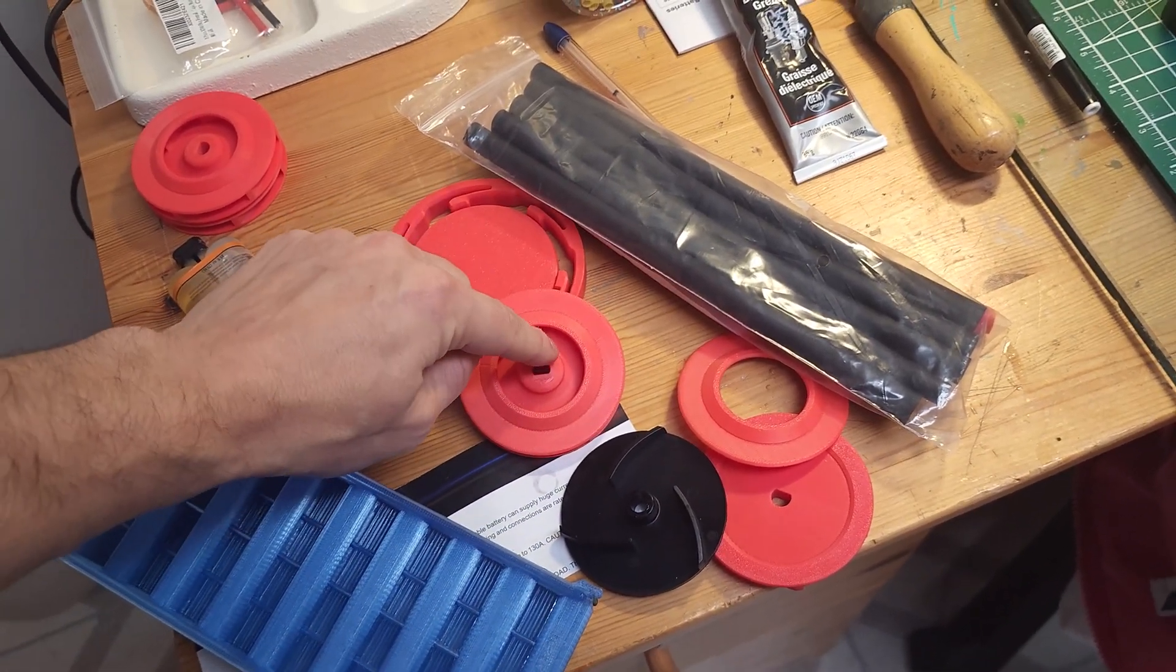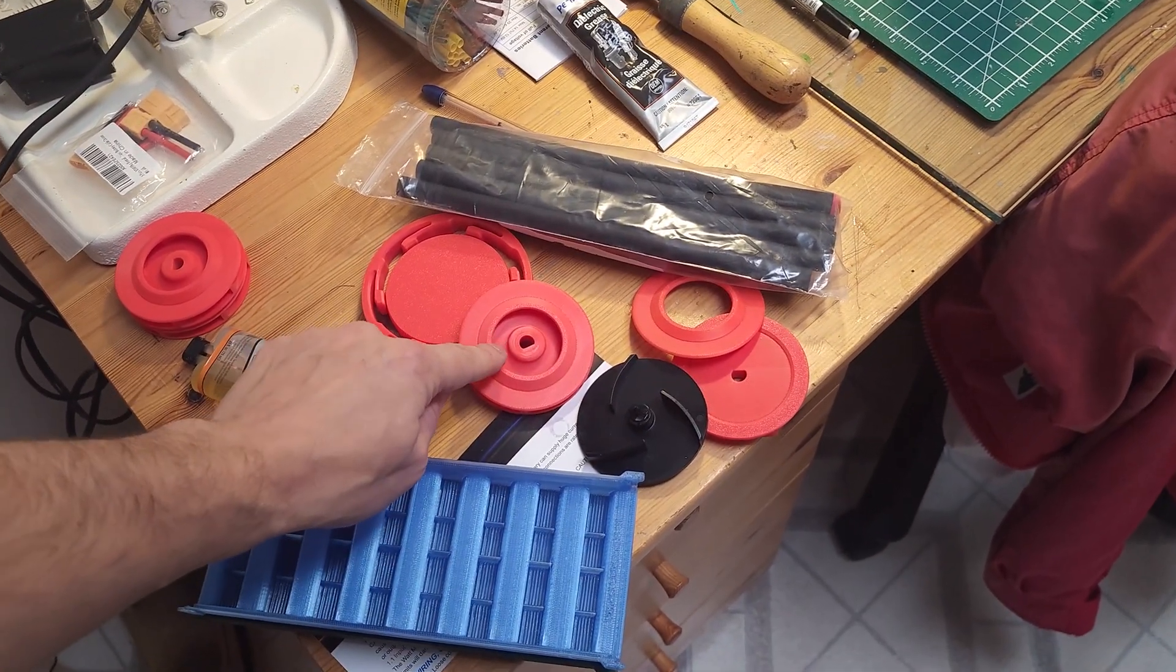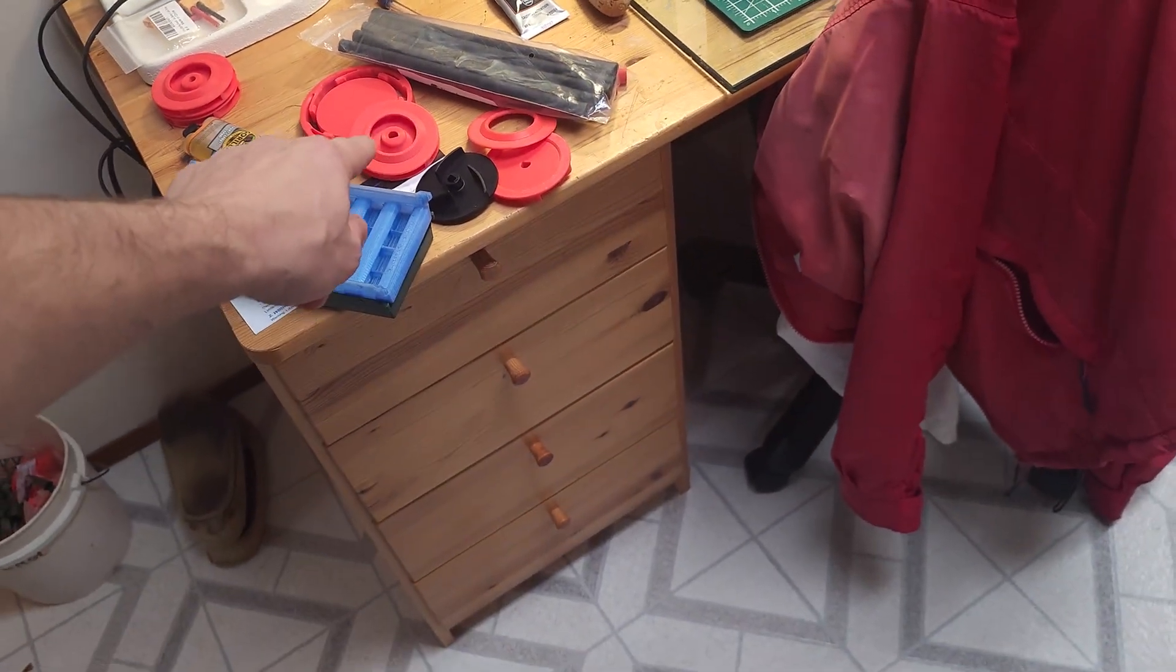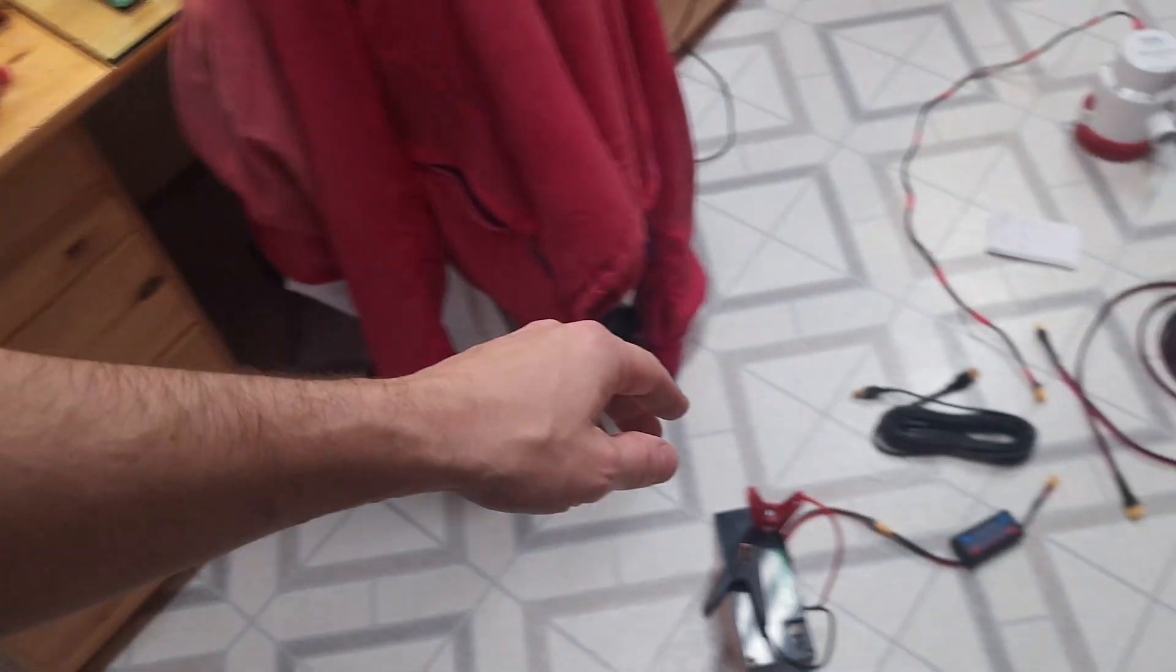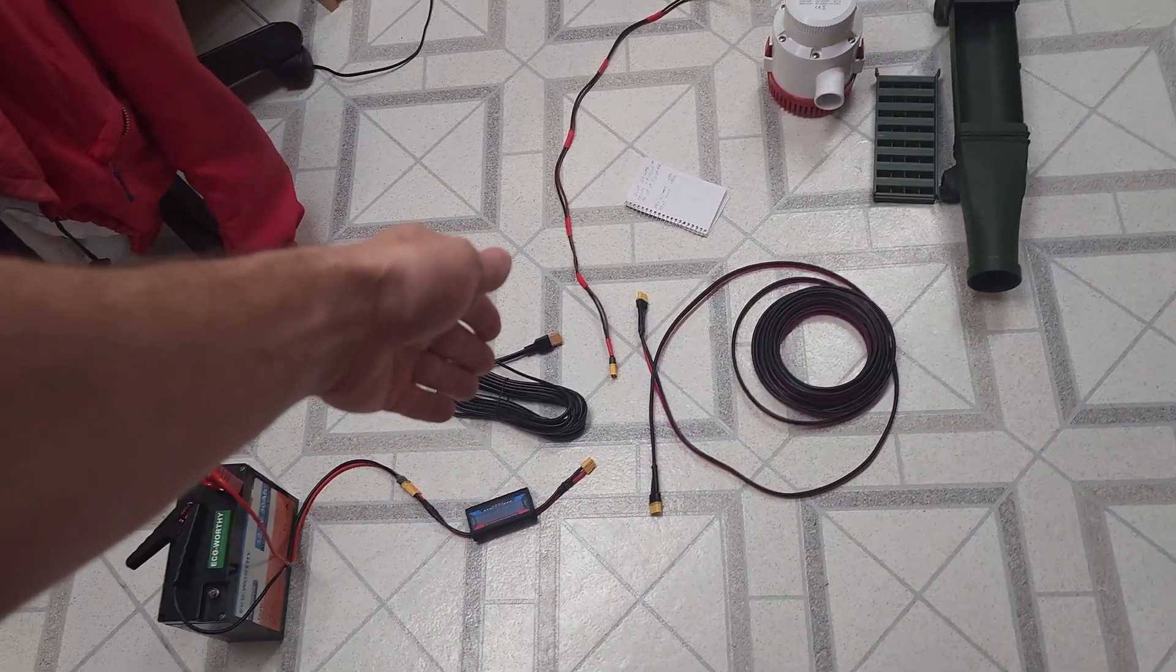This impeller will get you about 20% better suction than the stock, and I put a ton of time and effort into getting that. So why take that 20% better suction and just kill it with a too long and too narrow extension cord?